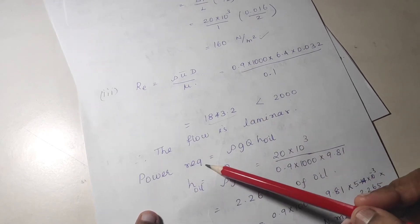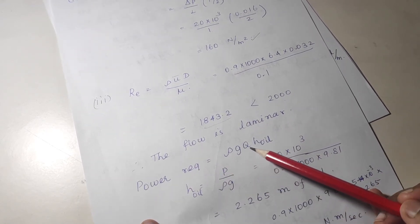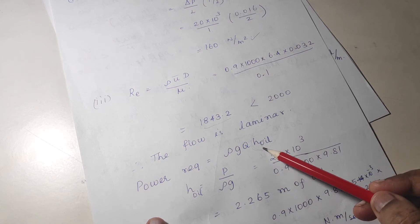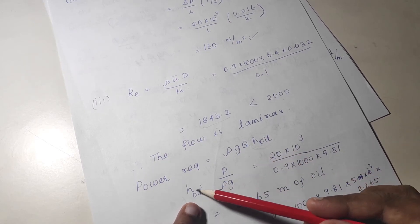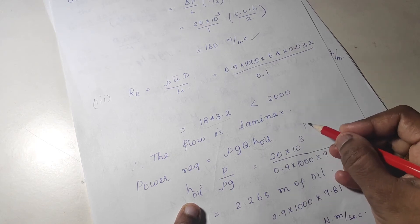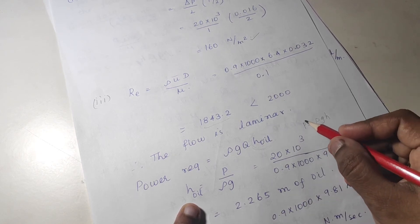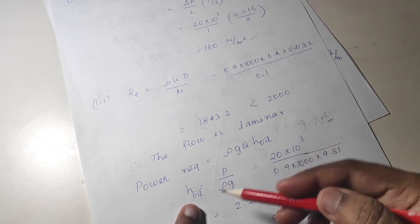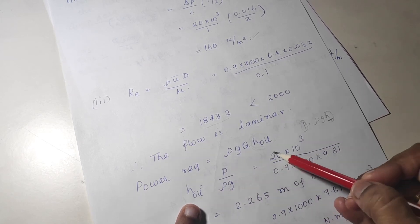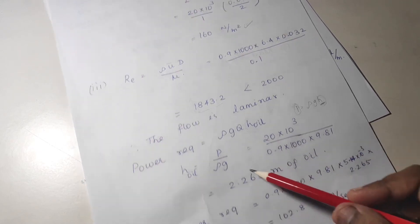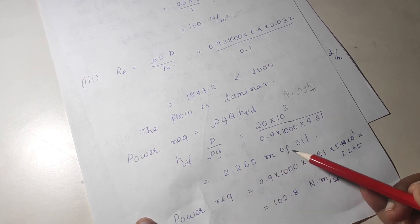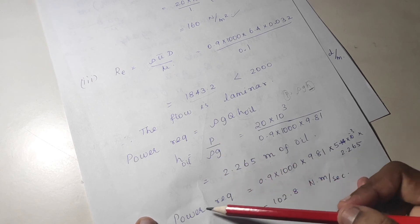For the power required: power equals rho g Q into h. The pressure head in terms of oil must be substituted. Since pressure p equals rho g h, the head h equals p divided by rho g. Rho and g are known, so the head of oil can be found — it is 2.265 meters of oil. Substitute this value into the power formula to find the power required.